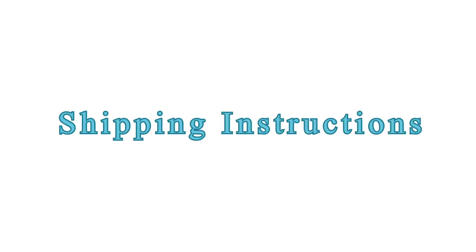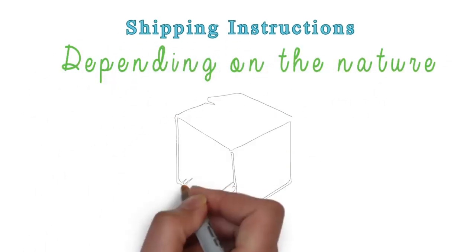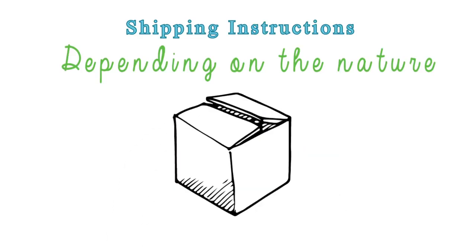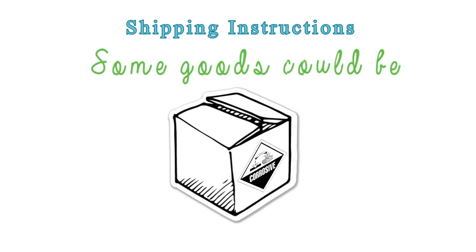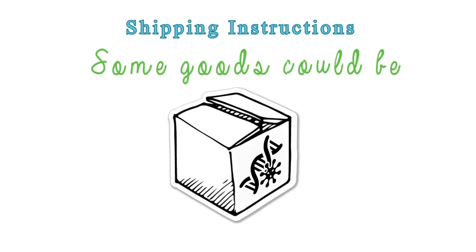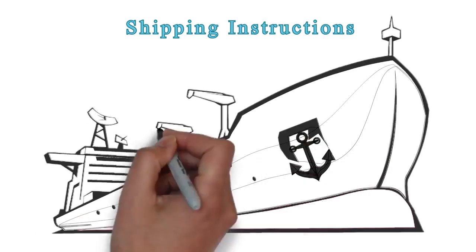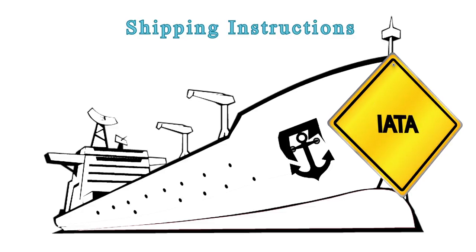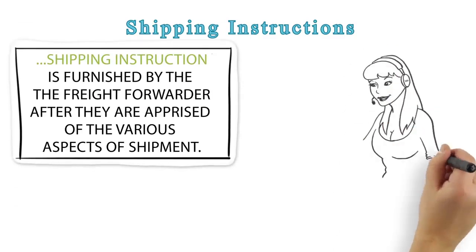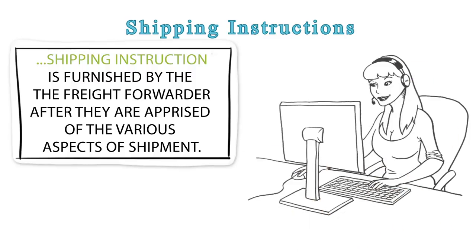Shipping Instructions. Depending on the nature of the goods, they have to be shipped under specific instructions. Some goods could be perishable, flammable, corrosive, biohazardous, toxic, pathogenic, or allergenic. So they have to be shipped under appropriate safety instructions as per various international conventions like HAZMAT, IATA, FIATA, SOLAS, etc. Shipping instructions are furnished by the freight forwarder after they are apprised of the various aspects of the shipment.